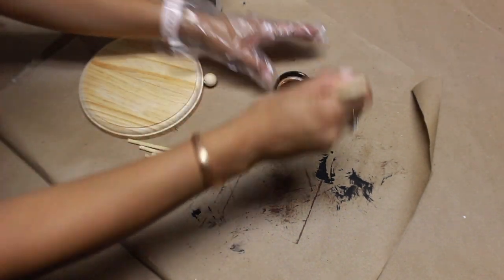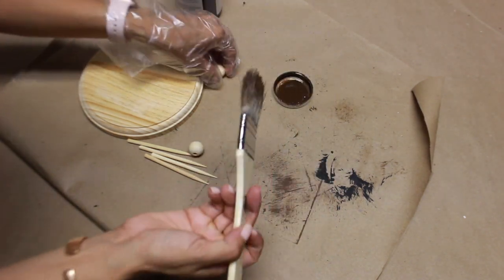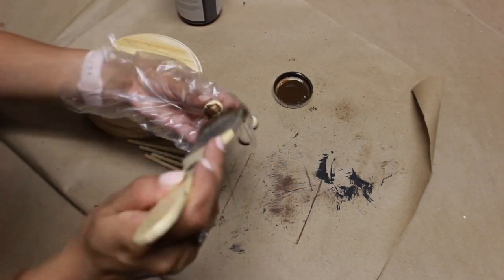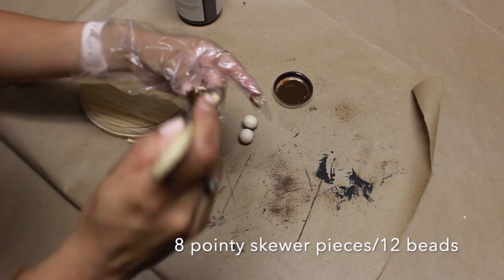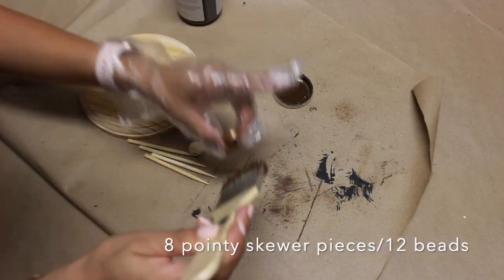I'm going to use that antique glaze for all of these parts. Again, you can use whatever paint you want, whatever stain you want. Again, for this exact look, you would need eight of the skewers with the pointy ends and 12 of the beads.